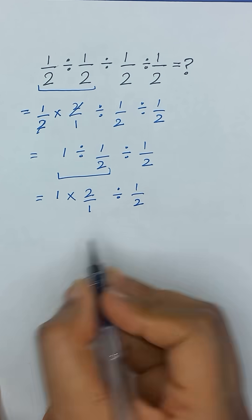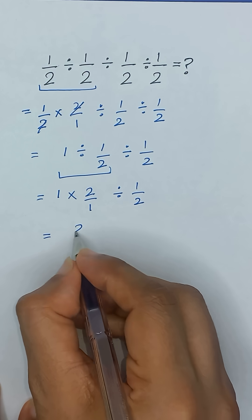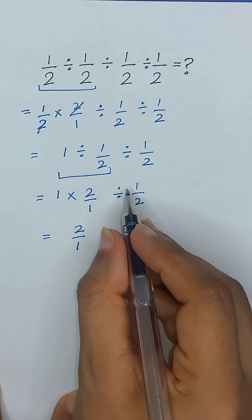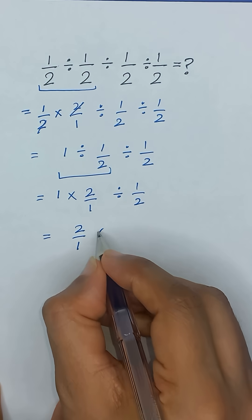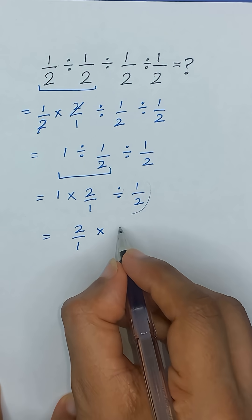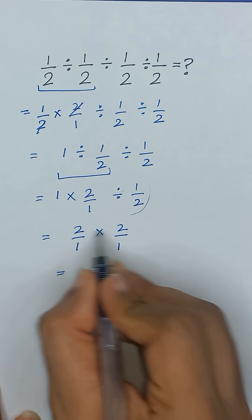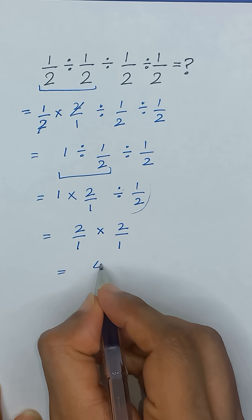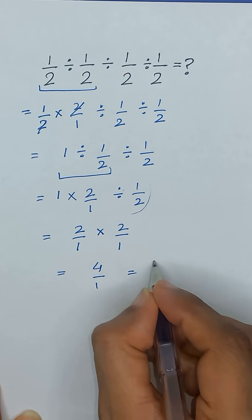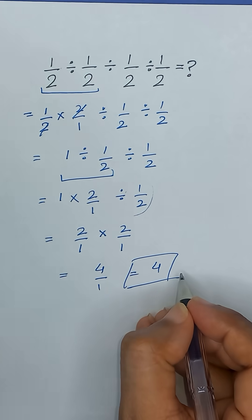Now it will become 2 divided by 1. Divide will change into multiply and taking the reciprocal of the next fraction, so it will become 2 times 2, which gives us 4 divided by 1. And 4 divided by 1 is the same as 4. Thanks for watching.